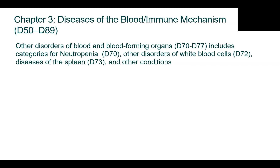Moving on to neutropenia. Neutropenia is an abnormally low count of neutrophils, which are white blood cells that help your immune system fight off infections, particularly bacteria and fungi. You have several types of white blood cells, and between 45 and 70 percent of all white blood cells are neutrophils.